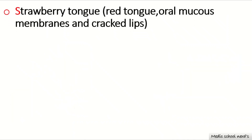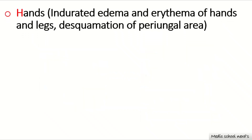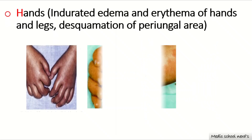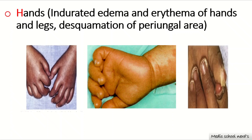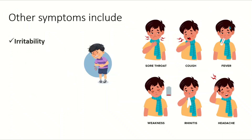Strawberry tongue presents with red oral mucous membranes and cracked lips due to perivascular infiltration of lymphocytes and mucosal involvement over the fungiform papillae. There is also indurated edema and erythema over the hands and feet, caused by increased movement of fluid from the intravascular space to the interstitial space, and venous endothelial cell destruction causing periungual desquamation. Other symptoms include irritability, rhinorrhea, cough, abdominal pain, diarrhea, vomiting, and arthritis of large joints.